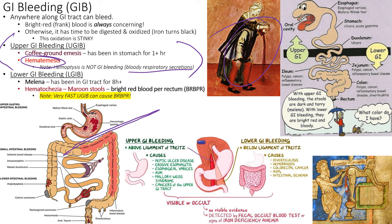Melena refers to black, tarry stools — blood that has been in the GI tract for 6-8 hours, slowly making its way through. It could even be a slower bleed from one side of the colon traveling around. Hematochezia (chezia = stool) is bright red blood per rectum. Importantly, hematochezia can also indicate an upper GI bleed if bleeding is extremely brisk.